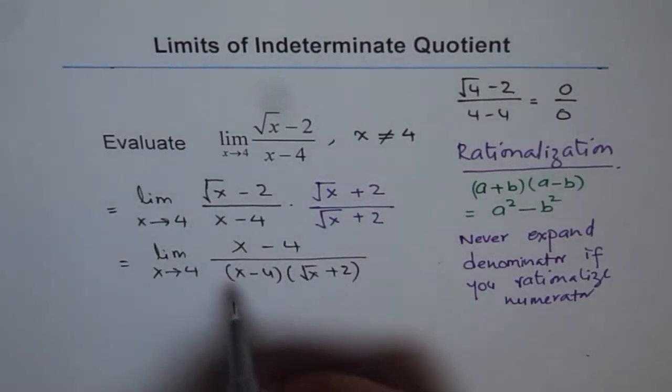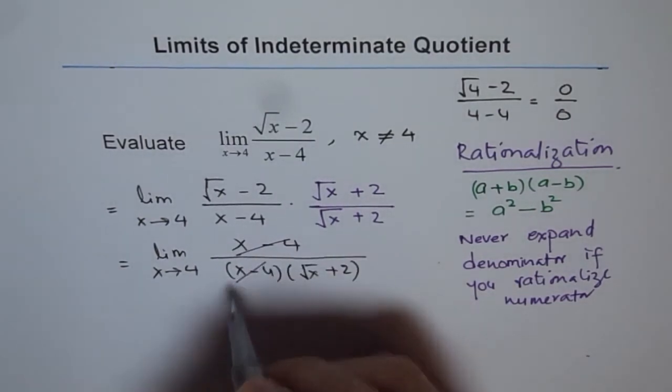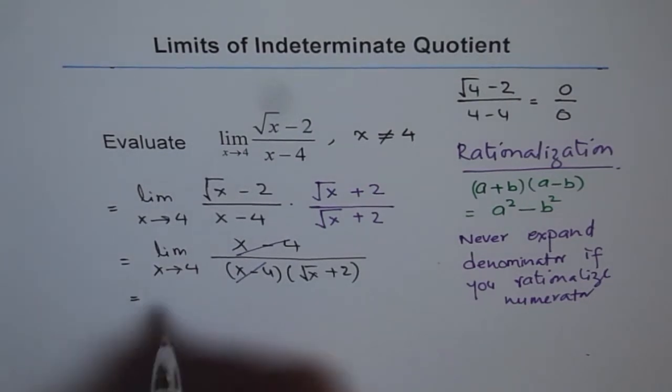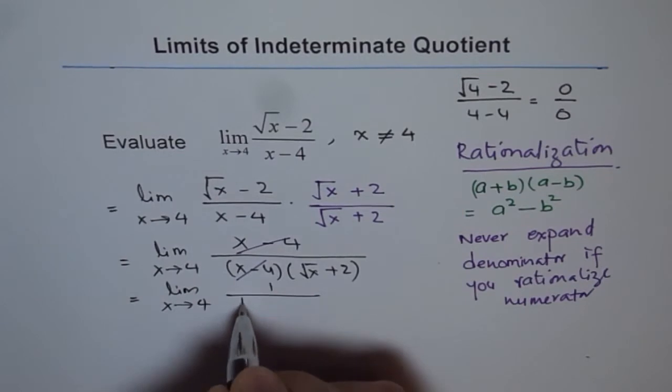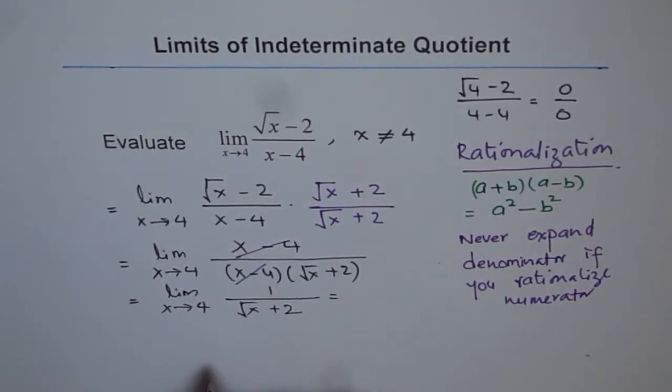Now, you can see, we do have a factor x minus 4 in the numerator also. Now, that has been brought out with the help of rationalization. And now, we can cancel this, simplify our expression, and find the limit. So, we get limit x approaches 4, and get 1 over square root of x plus 2.